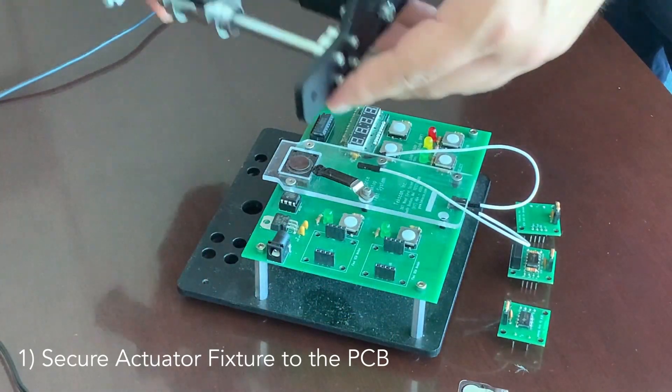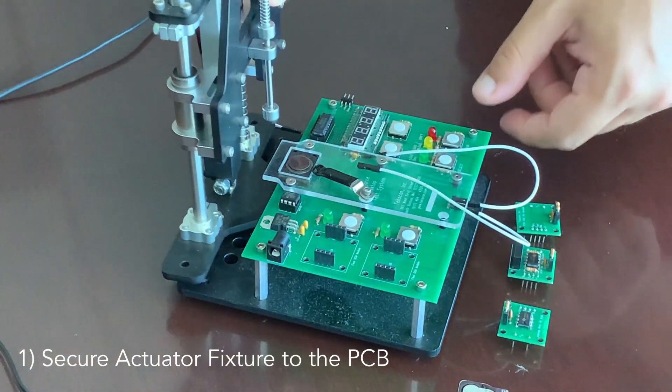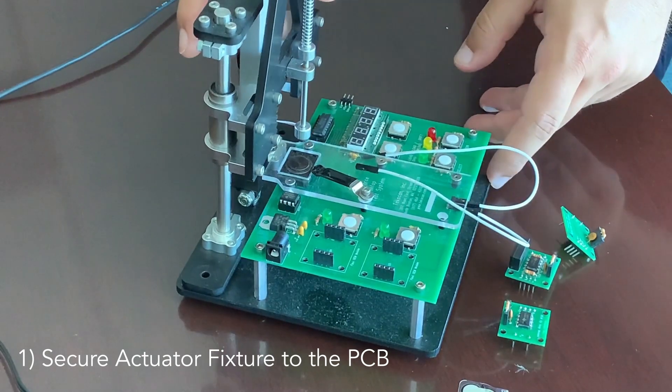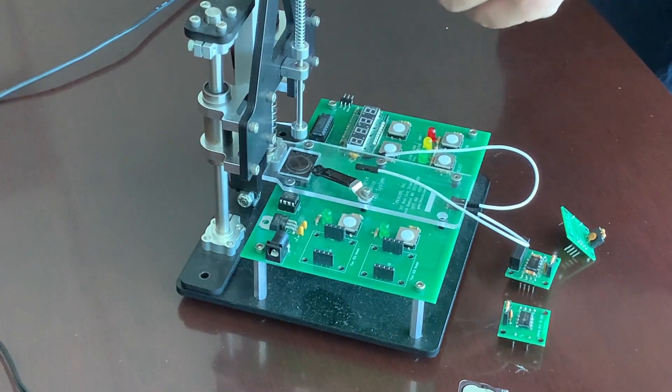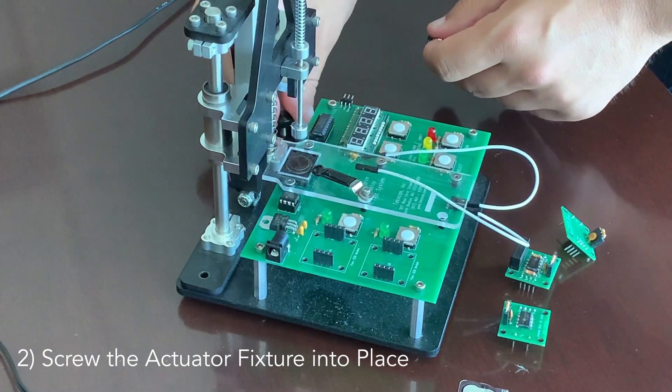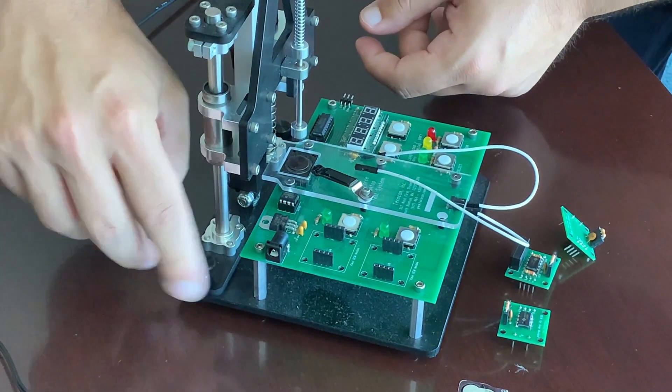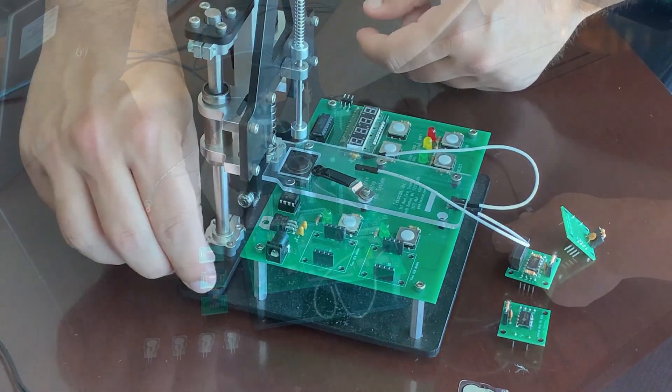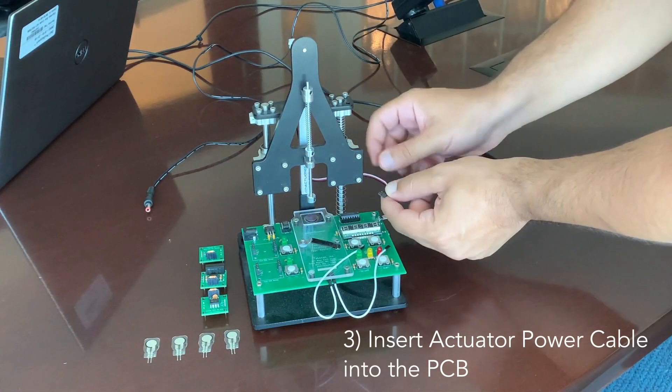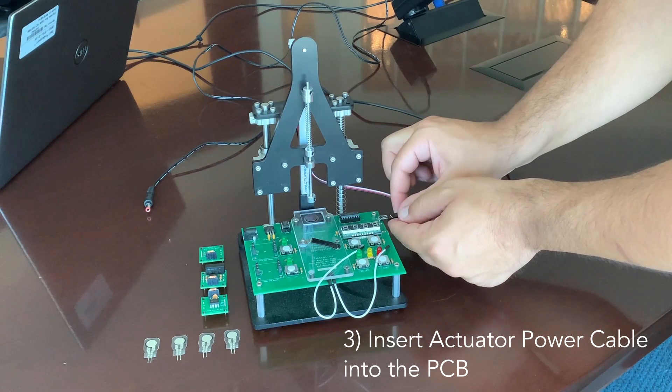This will simply butt up against the center post underneath the load cell. And then with our two mounting screws, we simply screw them in to the screw holes on each side. Plug in our power cord for the actuator to the PCB board.